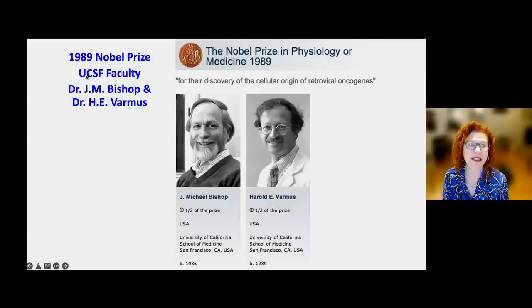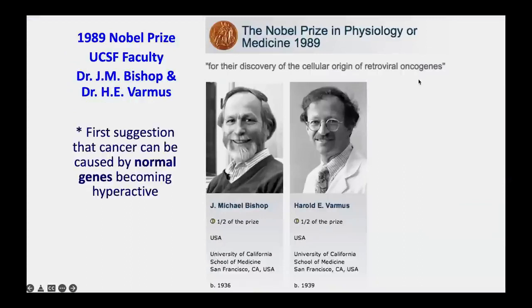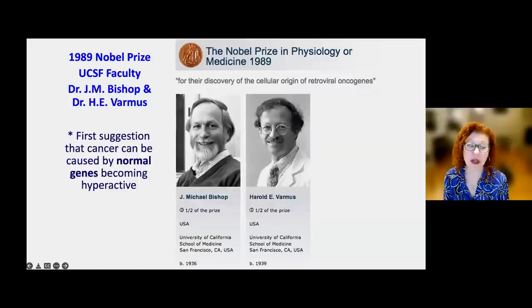A notable fact: two famous UCSF faculty—Drs. Bishop and Varmus—won the 1989 Nobel Prize for discovering the cellular origin of oncogenes. Before this, it was believed that cancer came from something external, more like an infectious agent. What Drs. Bishop and Varmus showed is that it actually comes from within cells—that normal genes become hyperactive and lead to overproliferation. This was a very important finding that moved forward the field of cancer research.